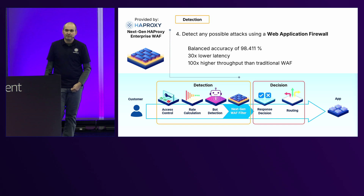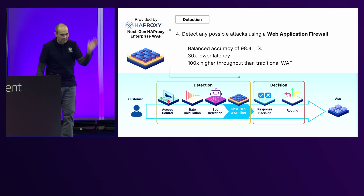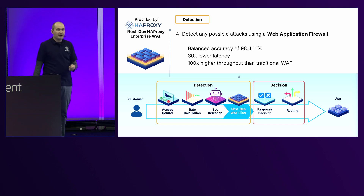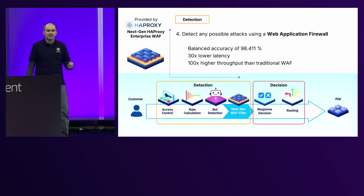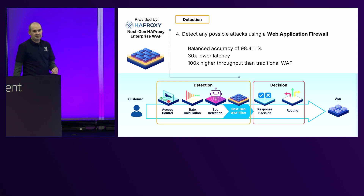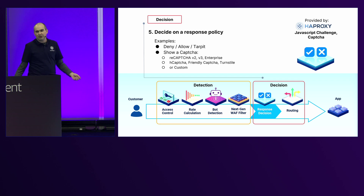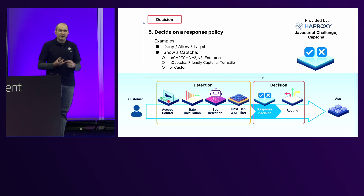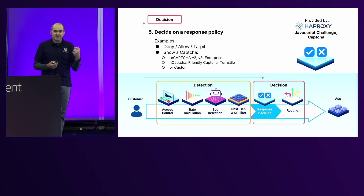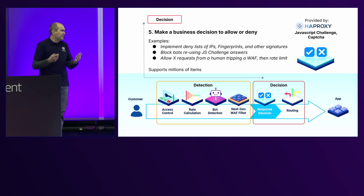Finally, we look at the web application firewall. Most people think security and say we'll slap a WAF on it and be done, but that's not enough — typical WAFs are slow. A benchmark is a WAF can do 300 requests per second on a CPU. We benchmark ours to 300,000 requests per second on a CPU, because it has to be fast. So we have all of these detection layers, and now we can decide what to do: do we deny this request, allow it, slow it down, serve it a JavaScript challenge, serve it a CAPTCHA? We make a business decision about that because it's your business decision what to do based on the data.